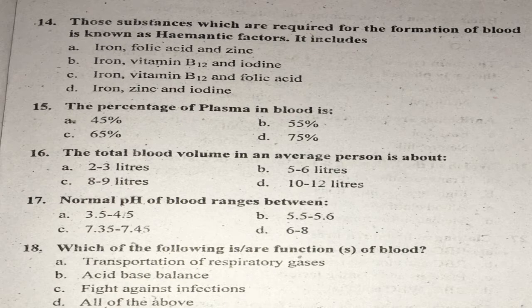That is why during pregnancy, folic acid and iron are given. Question fifteen: What is the percentage of plasma in blood? Plasma constitutes 55 percent of blood. Right answer — 55 percent.